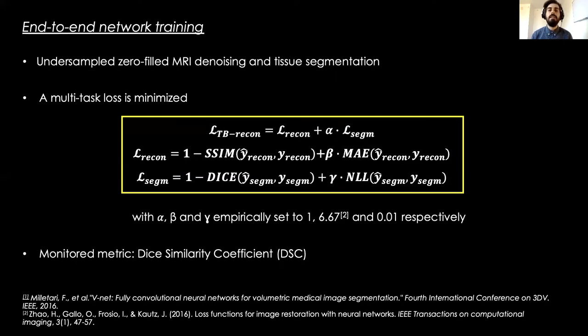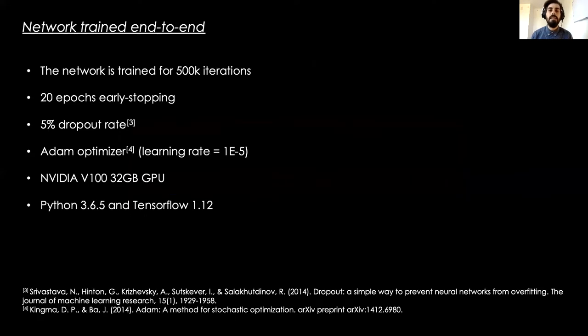During training, the Dice score is monitored. This makes the reconstruction an auxiliary task, as we primarily focus on the image segmentation. Dropout and early stopping were employed to regularize training.